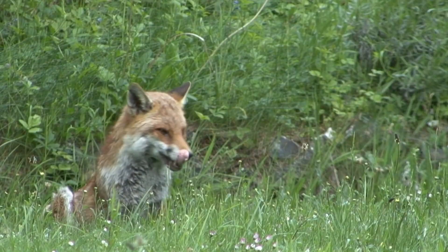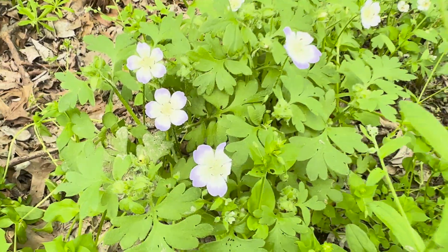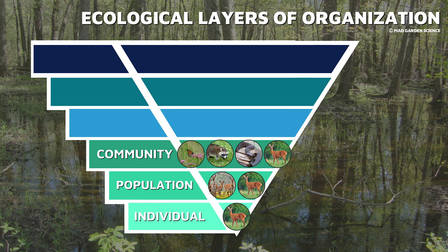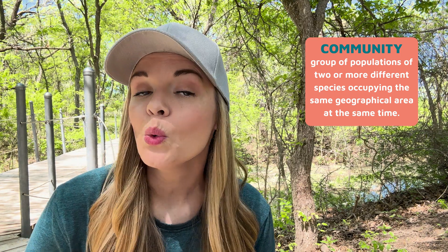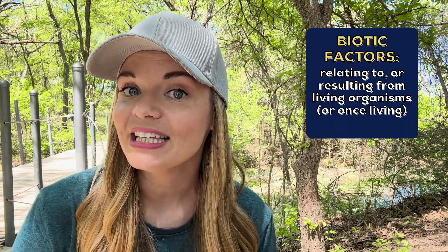These deer aren't the only living things here, though. There are raccoons, foxes, different types of fish, turtles, dragonflies, birds, snakes, and earthworms — but those are just a few of the animals. Plants are also living, so these trees, flowers, grasses, and lichen are also on the list. And don't forget about all of the microbes. Each and every one of these organisms belong to a population of their own and are all living and interacting together here at this nature preserve to form a community. A community is a group of populations of two or more different species occupying the same geographical area at the same time. It's important to remember that a community only contains the biotic, or living, elements.